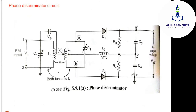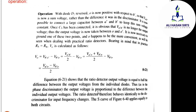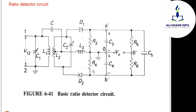Through the transformer primary and secondary windings, the frequency variation in the input signal is converted to equivalent amplitude variation. The diode detector circuit consists of D1 and D2 — D1 is responsible for the upper secondary and D2 for the lower secondary. This is how the ratio detector circuit converts frequency variation to amplitude variation and then recovers the original information signal.